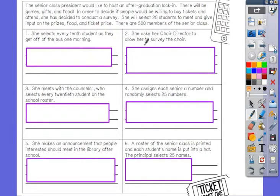The senior class president would like to host an after graduation lock-in. There will be games, gifts, and food. In order to decide if people would be willing to buy tickets and attend, she has decided to conduct a survey. She will select 25 students to meet and give input on the prizes, food, and ticket price. There are 500 members of the senior class.